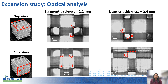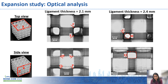Along with these observations, we also observed that especially for ligament thicknesses of 2.1 and 2.4 mm, some of the pores were clogging, or some of the resin was sticking to the top surface, which creates extra layers that were not part of the design. As a result, it is increasing the ligament thickness, especially along the build direction.